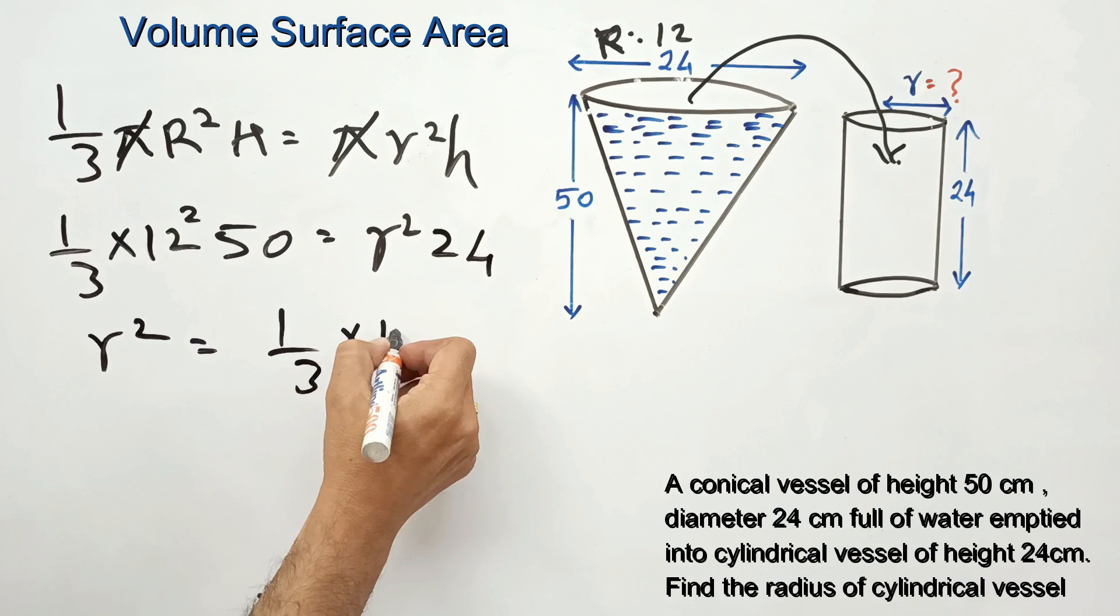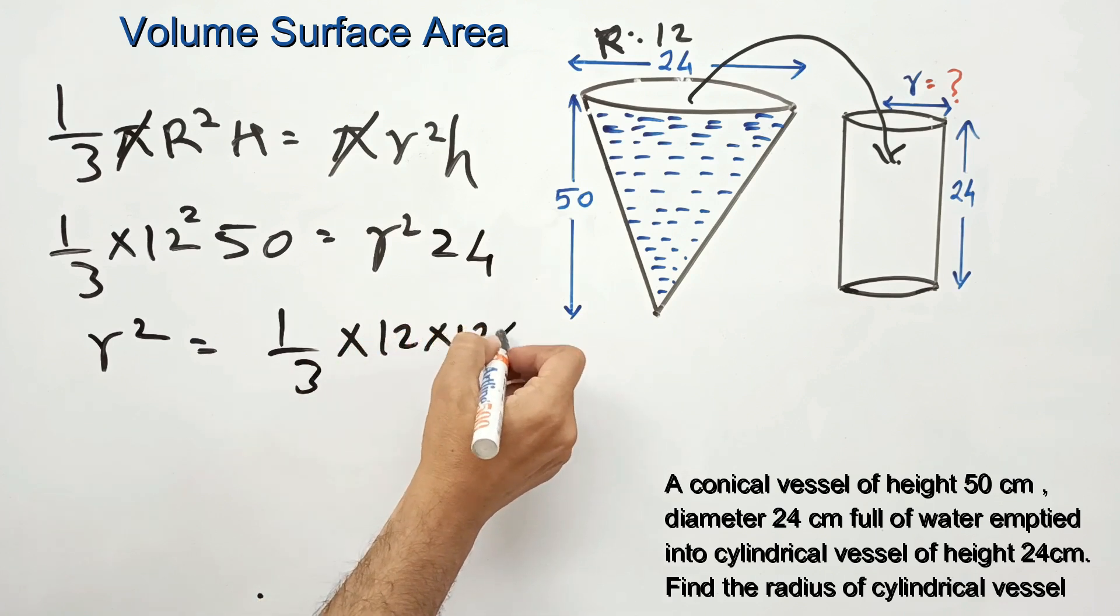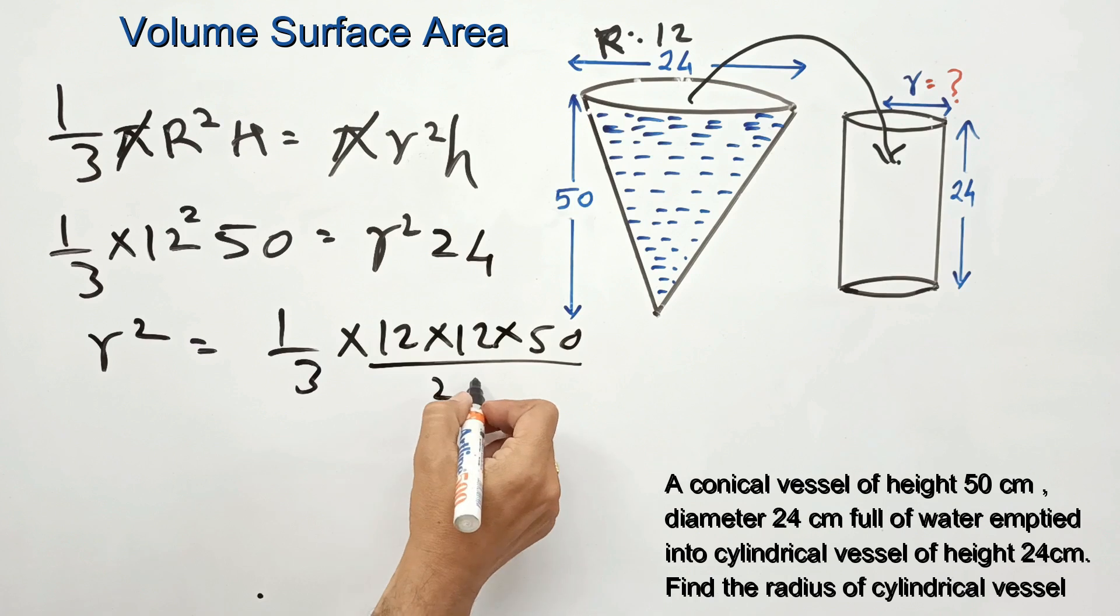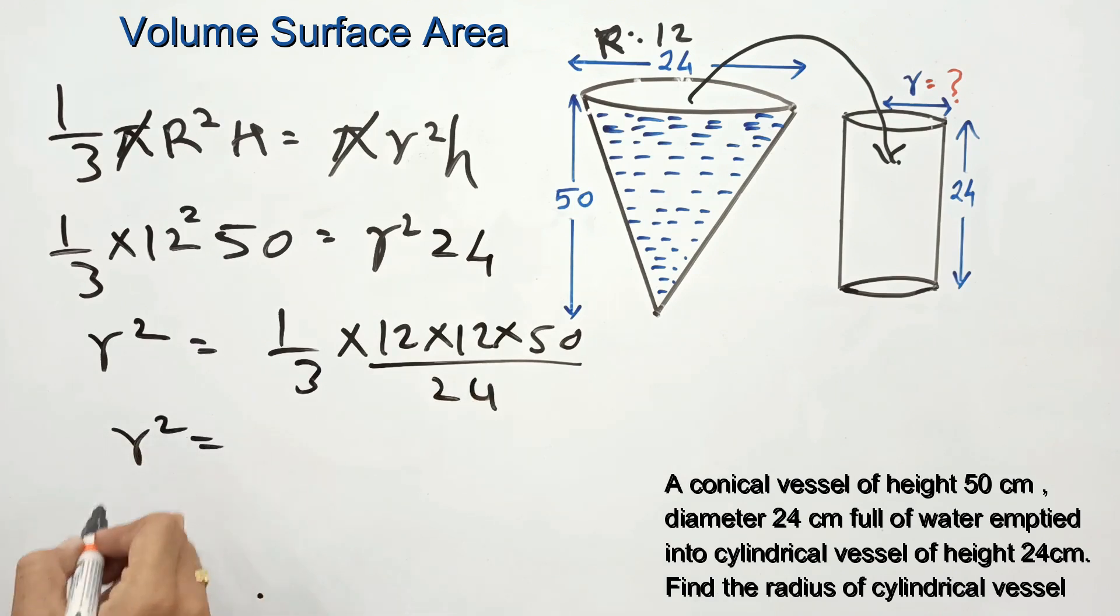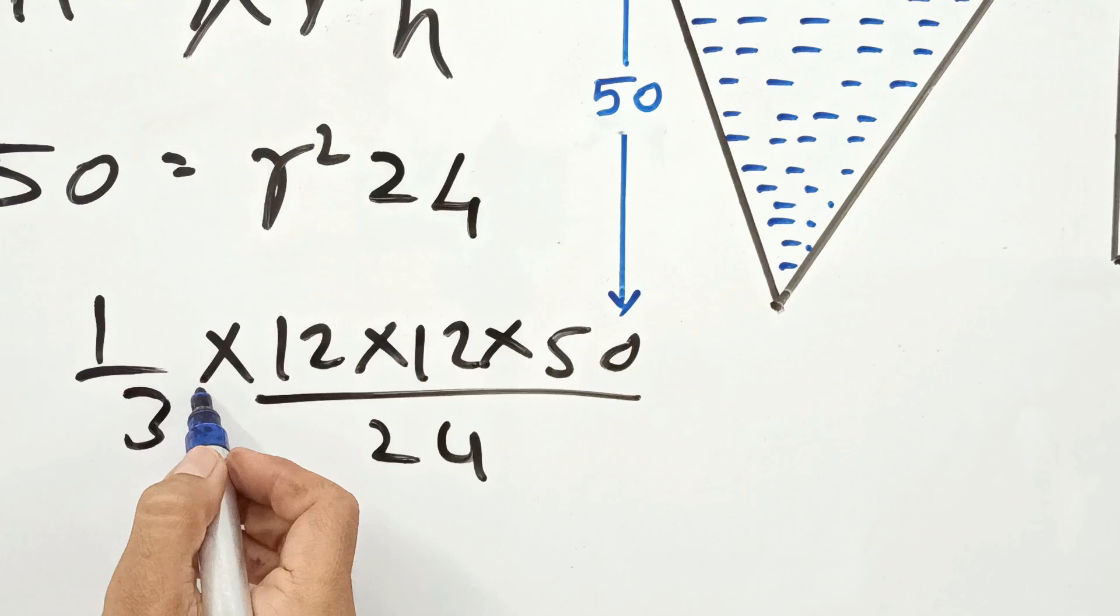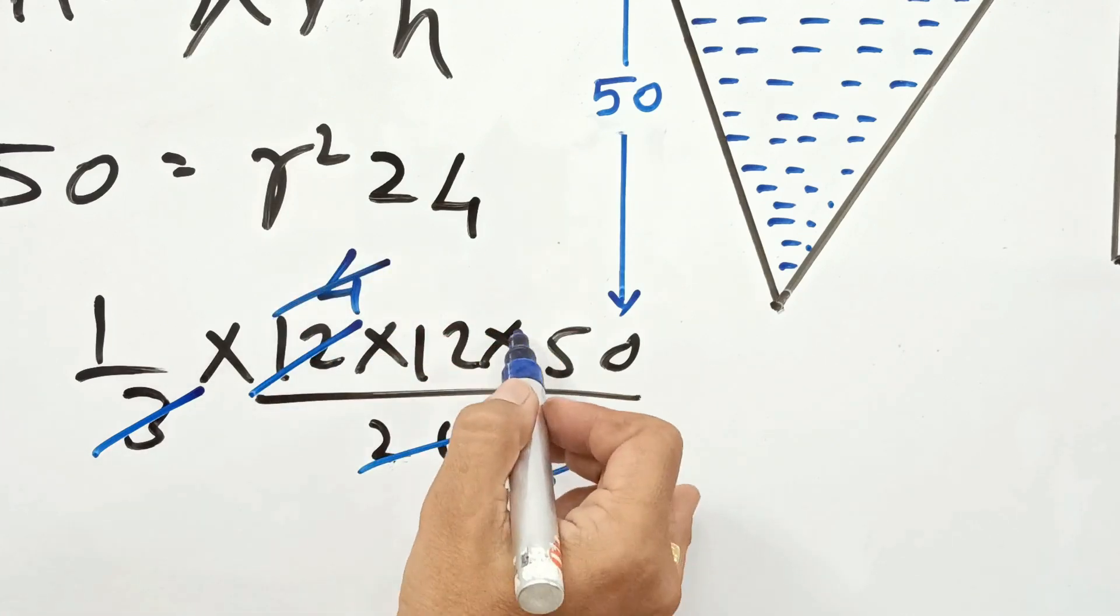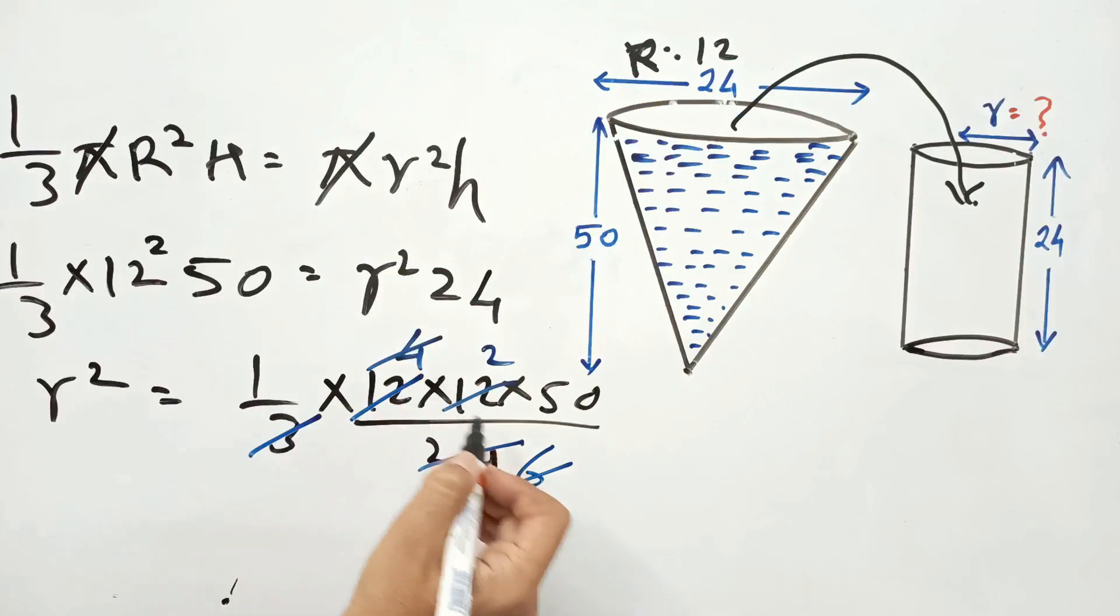one-third times 12 times 12 times 50 divided by 24. Now focus on the calculations. We reduce it by cancellation. Finally, we got 50 times 2,